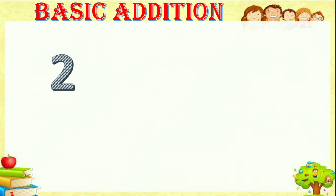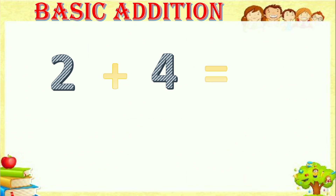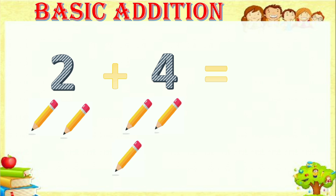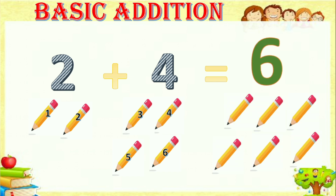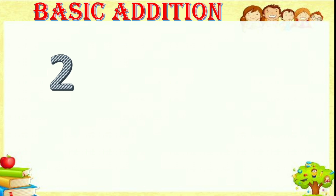Next, two plus four equals. For two there are two pencils, and for four there are one, two, three, four — four pencils. So totally we have to count now — one, two, three, four, five and six. There are totally six pencils.